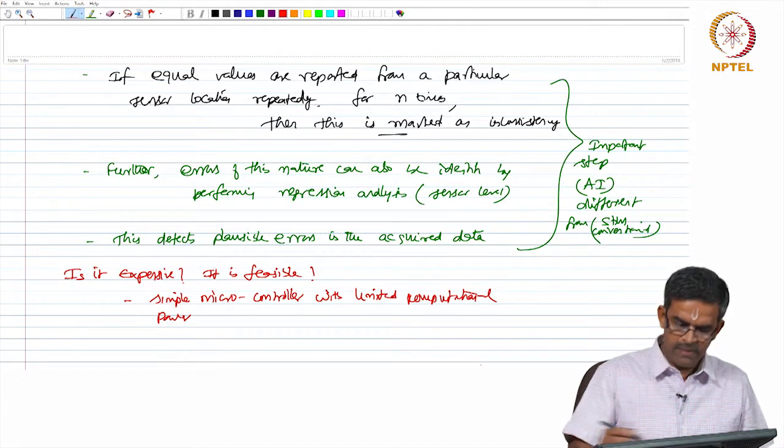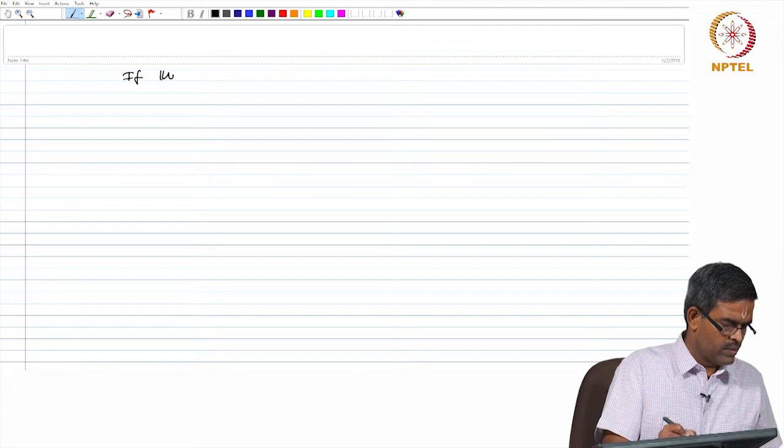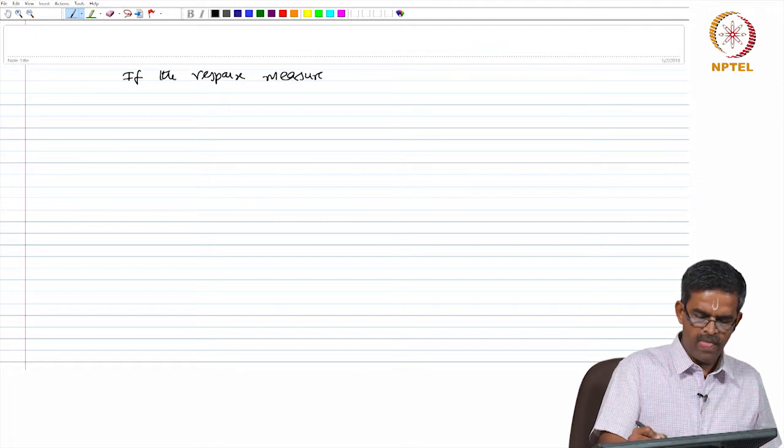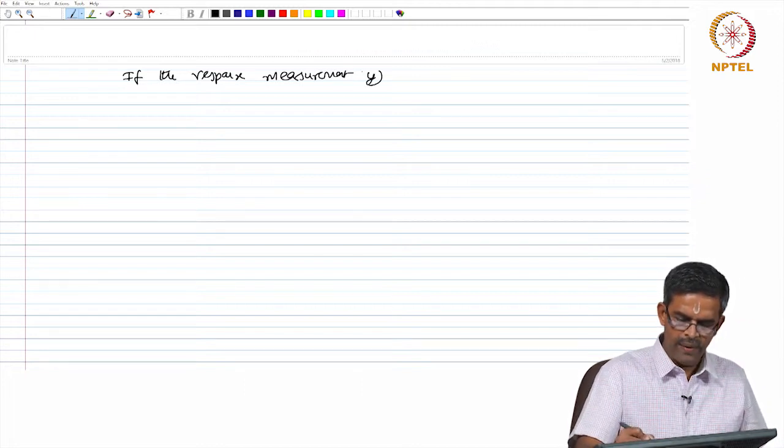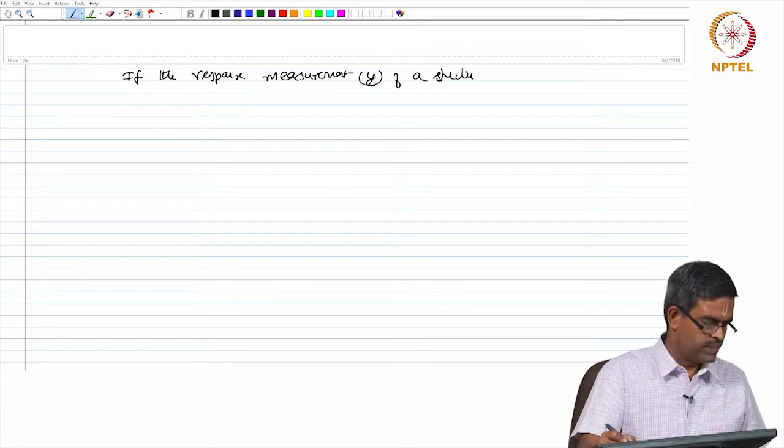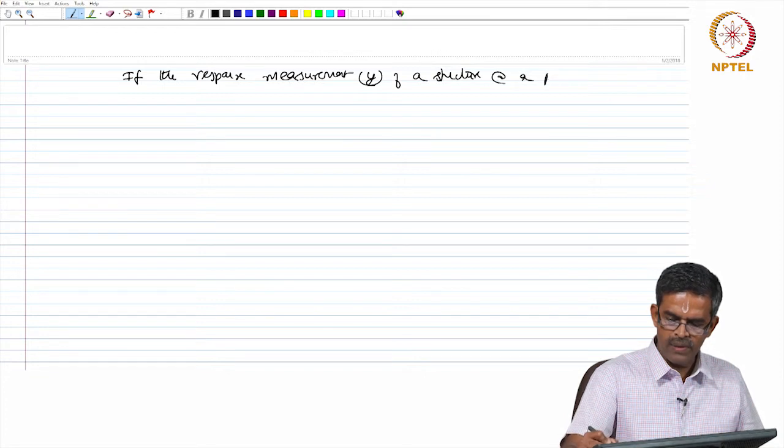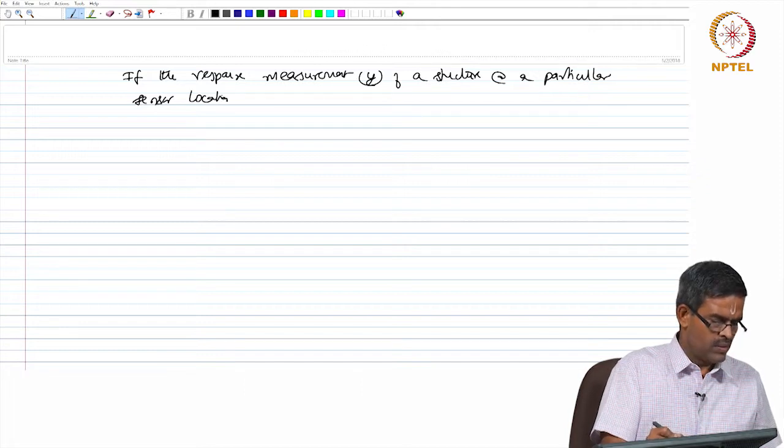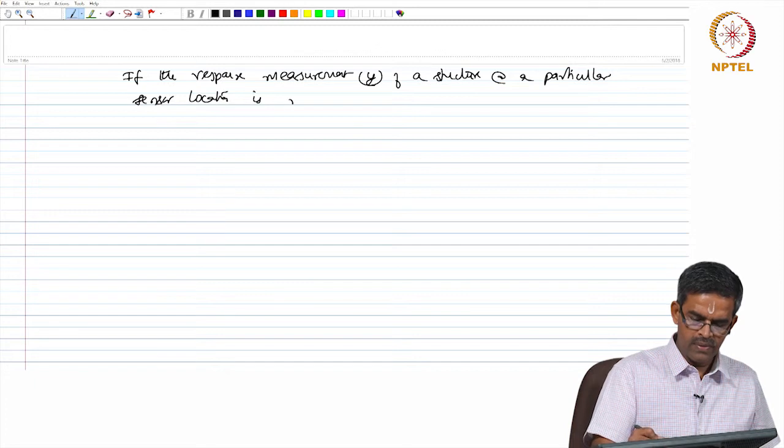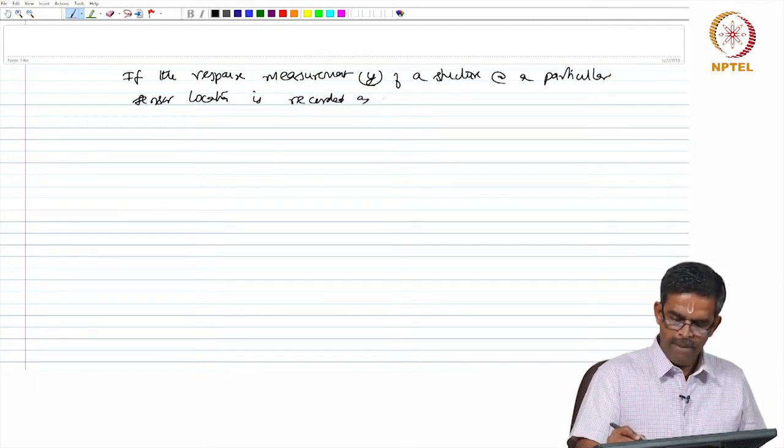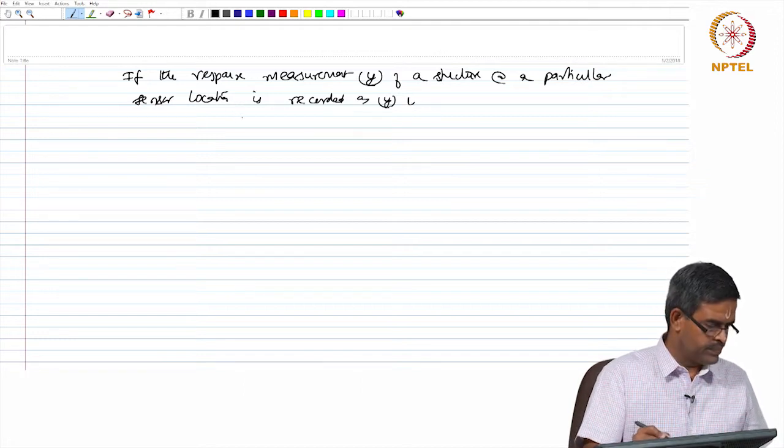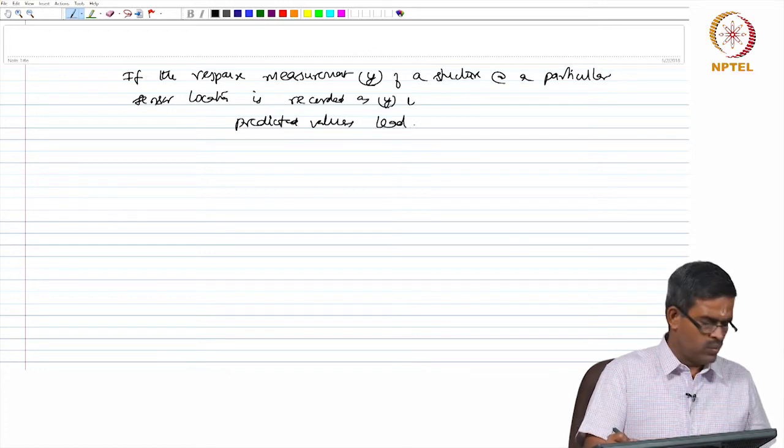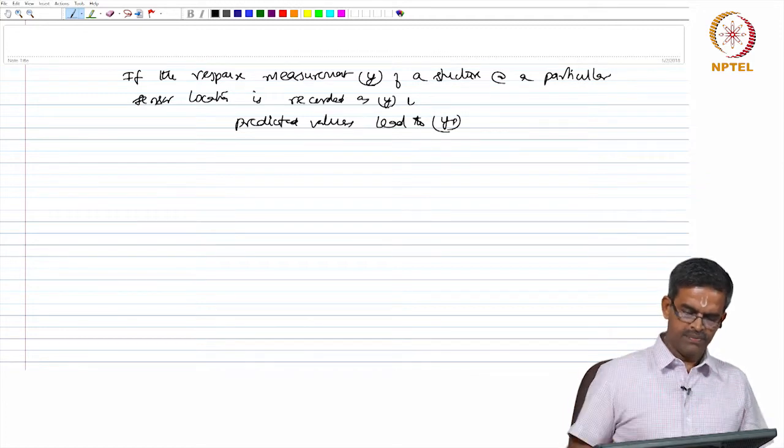Let us say if the response measurement Y of a structure at a particular sensor location is recorded as Y, and predicted values lead to Yp, where p stands for predicted value.